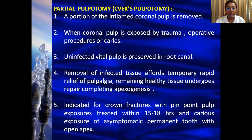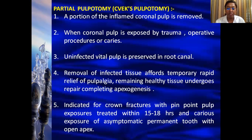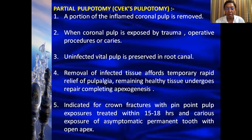Partial pulpotomy (CVEK pulpotomy) is indicated when the pulp is exposed by trauma or during operative procedures accidentally, or when caries exposure occurs involving only a part of the coronal pulp. Only the infected tissue is removed, which offers temporary relief, and the remaining healthy tissues undergo complete apexogenesis. It is indicated especially for crown fractures with a pinpoint pulp exposure that can be treated within 15–18 hours, or when carious exposure occurs in an asymptomatic young permanent tooth with an open apex.